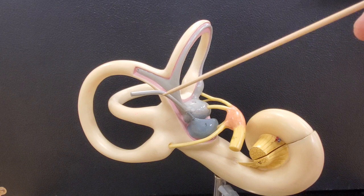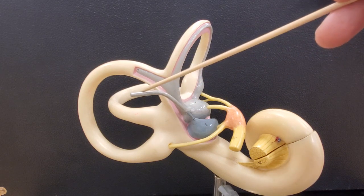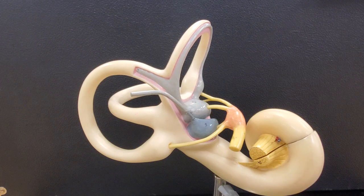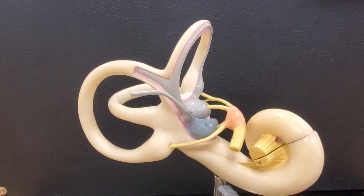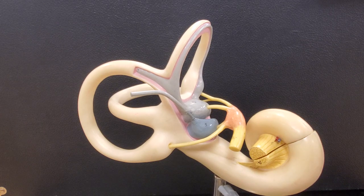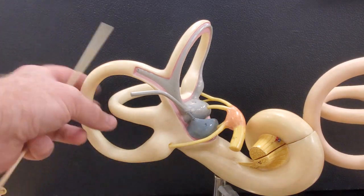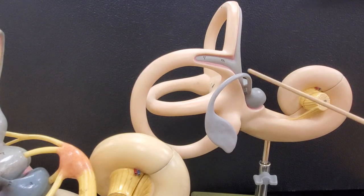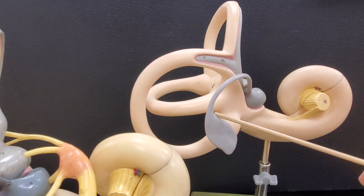And that endolymph is going to drain through this structure called the endolymphatic duct. And there's usually a little bag-like structure. This model is missing it. We have different versions of the model. One has this yellow structure, the other one does not. But here you can see the endolymphatic duct and the endolymphatic sac.